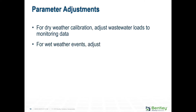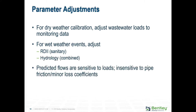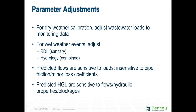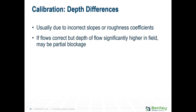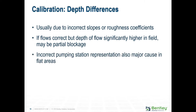What do you adjust during active calibration? Here are some general steps. For dry calibration, adjust wastewater loads to monitoring data. For wet weather events, adjust RDII for sanitary sewers and hydrology for combined sewers. Predicted flows are sensitive to loads but insensitive to pipe friction and minor loss coefficients. Predictable hydraulic grade lines are sensitive to flow hydraulic properties and blockages. When a monitored reach of gravity sewer is fed from a pump station, the model will usually predict the correct flow rates if the pump curves are correct, but may have trouble matching the on-off levels.